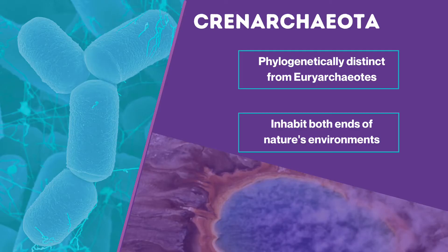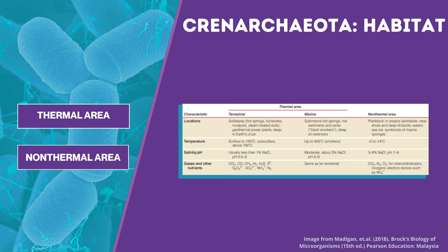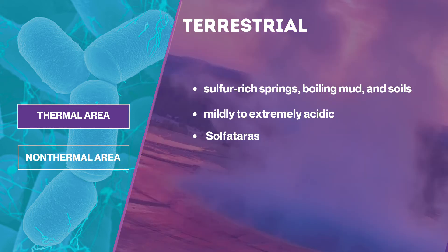Next is the Crenarchaeota. Crenarchaeotes are phylogenetically distinct from Euryarchaeotes and inhabit both ends of nature's temperature extremes. Most hyperthermophilic archaea have been isolated from geothermally heated soils or waters containing sulfur and hydrogen sulfide, and most of these species metabolize sulfur in one way or another. Hyperthermophilic Crenarchaeotes have been obtained from terrestrial environments such as sulfur-rich springs, boiling mud, and soils where temperatures reach up to 100 degrees Celsius. They are mildly to extremely acidic owing to the production of sulfuric acid. Sulfatares — hot, sulfur-rich environments — are found throughout the world, including Italy, Iceland, and Yellowstone National Park.